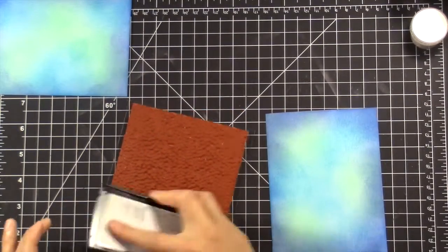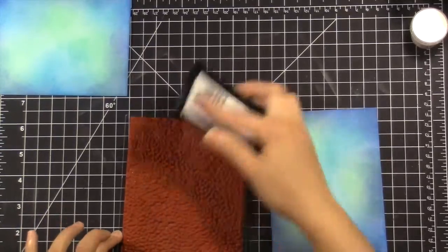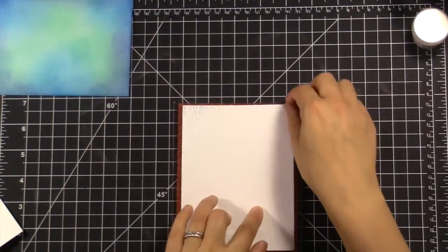I'm using this Hero Arts Tiny Star Stamp Set, which just reminds me of Baby. I don't know what it is. So I'm using this with some Versamark ink and just inking that up really well.